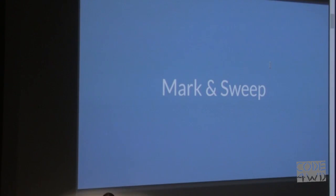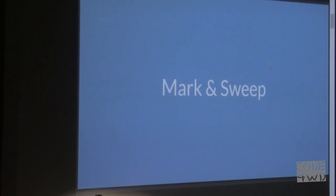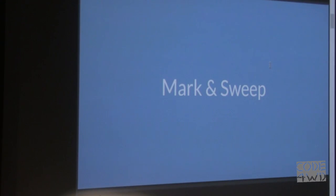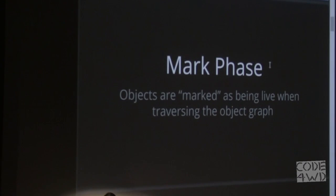The first algorithm — the original one invented in 1959 — is called mark and sweep. It's used by Ruby's garbage collector and is probably one of the most popular and most researched algorithms. The original is often referred to as naive mark and sweep because it stopped the world with no optimization, but at the time it was revolutionary. Mark and sweep is broken up into two phases. The first is the mark phase, where we traverse the graph and mark objects as being live.